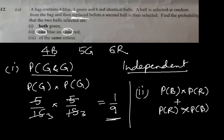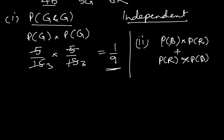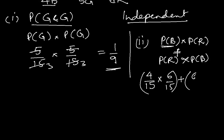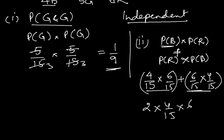So we'll have two cases: blue-red or red-blue. The blues are 4 out of 15 and the reds are 6 out of 15. Because of 'or', and since they are mutually exclusive, we add these two cases. It becomes 2 times (4/15 times 6/15) because they are exactly the same multiplication. Cancelling by 3 and 5, we get 16 out of 75.